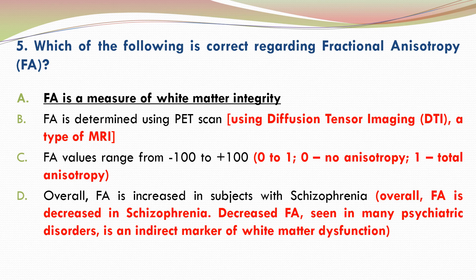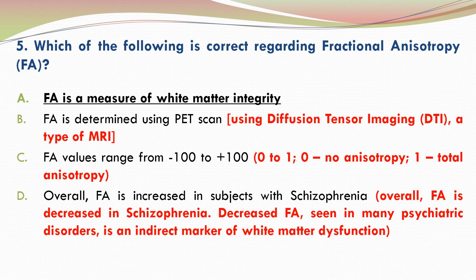B is incorrect because fractional anisotropy is determined using diffusion tensor imaging, which is a type of MRI scan. C is incorrect because the values for fractional anisotropy range from 0 to 1: 0 represents no anisotropy, while 1 represents total anisotropy. D is incorrect because overall fractional anisotropy is decreased in schizophrenia compared to healthy controls. Decreased fractional anisotropy seen in many psychiatric disorders is an indirect marker of white matter dysfunction.